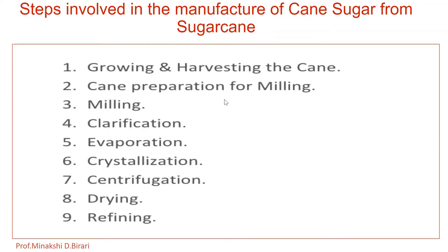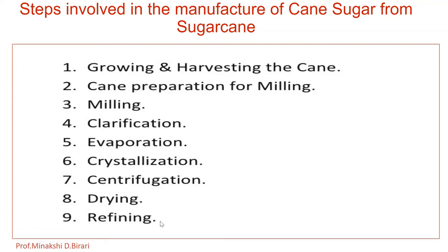The steps involved in the manufacture of cane sugar from sugarcane are: raw materials, extraction of juice, growing and harvesting the cane, cane preparation for milling, milling, clarification, evaporation, crystallization, centrifugation, drying, and refining. We have to study each of these steps in detail one by one.